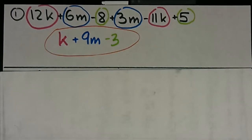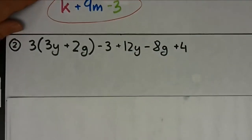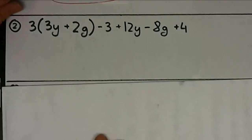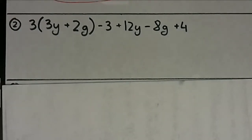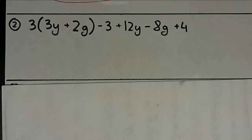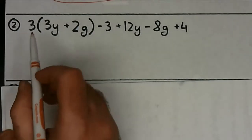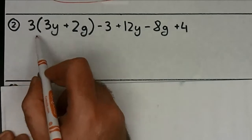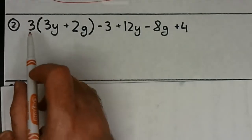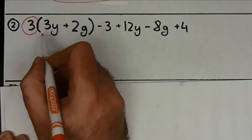Let's move on to number two. With number two it's similar to number one — you're still asked to simplify and combine like terms — but before you do that there's a step you need to take. Can someone tell me what is that first step? You need to open up this parenthesis by distributing whatever is outside — the three — via multiplication to everything inside. So you need to distribute this three.